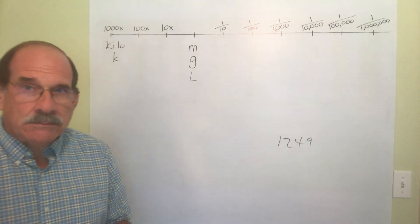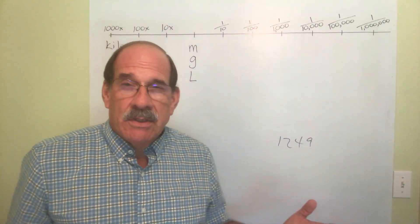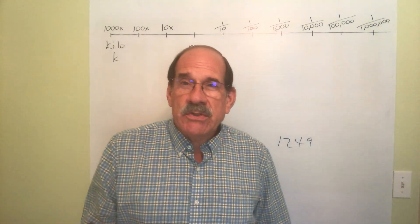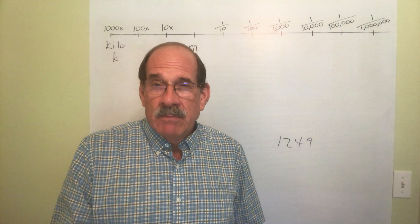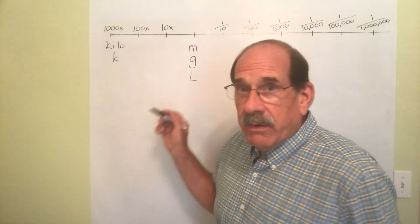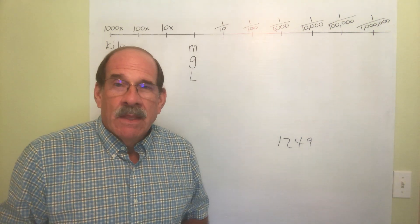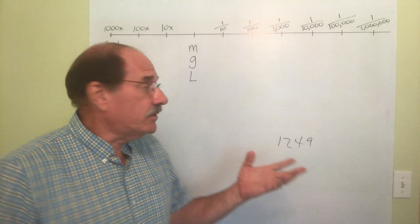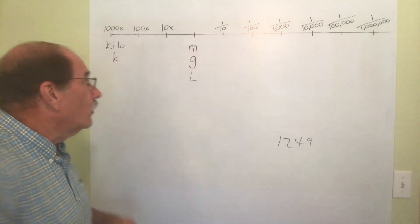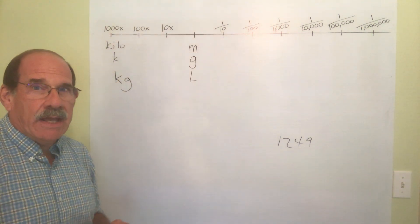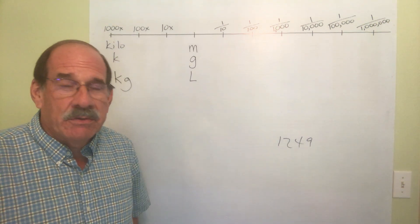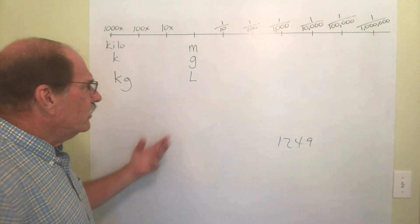Kilo, abbreviated with a lowercase k. A thousand meters is a kilometer. A thousand grams is a kilogram. A thousand liters is a kiloliter. The terminology and symbols are all very consistent — kilo is the root for a thousand of them. You will use kilogram in the medical field. You won't use kilometers or kiloliters in the medical field, but the pattern is the same consistent thing.